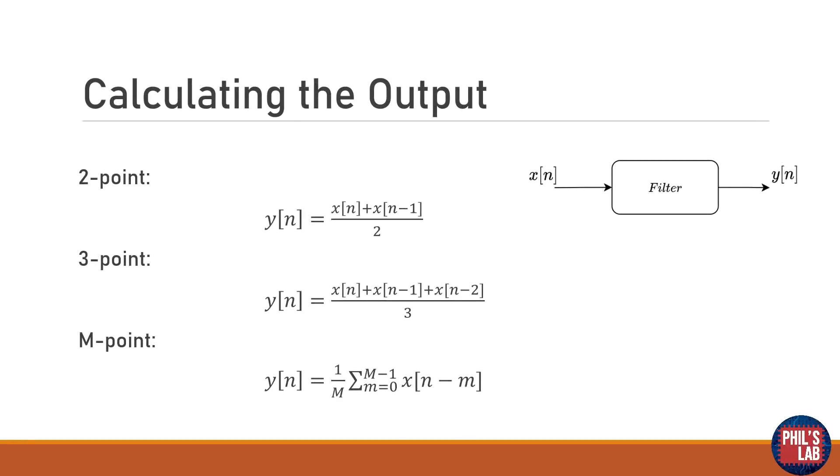Computing the filter's output is actually really straightforward. Since we are in discrete time as we are implementing this on a digital system, we are working with samples. On the top right here you can see the input of the filter is x at sample n and the output is y at sample n. So for a two-point moving average filter we look at the first equation. We take the current input sample, add the previous input sample and divide this sum by 2.